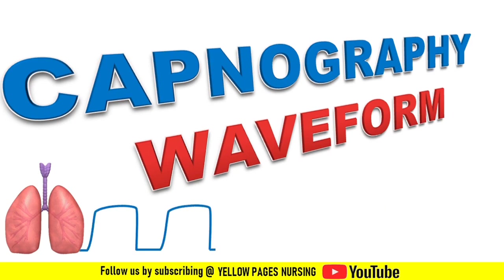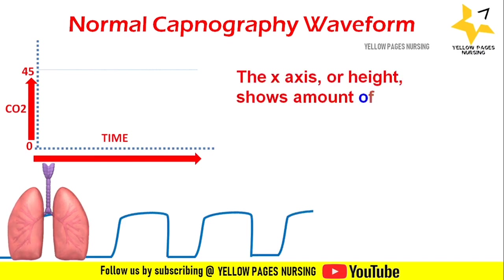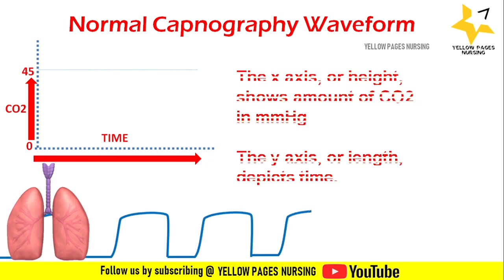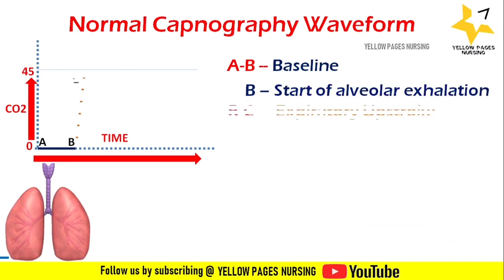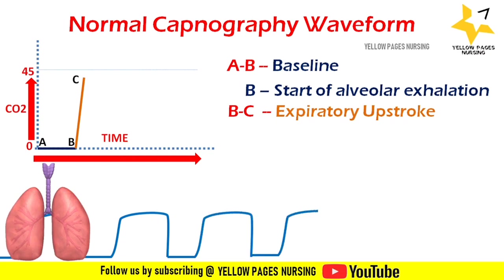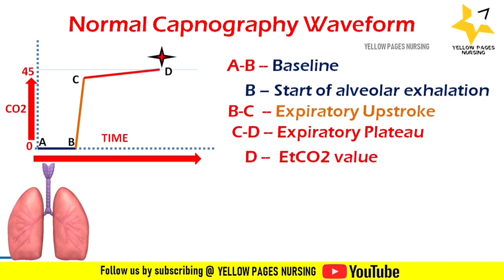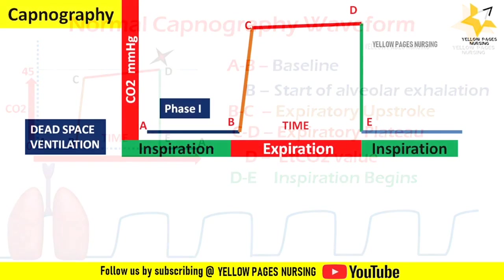Let's get into the session. Here is the normal capnography waveform. The x-axis or height shows the amount of CO2 in mmHg; the y-axis or length depicts the time. A-B denotes the baseline, where B is the start of alveolar exhalation. B-C denotes the expiratory upstroke, C-D denotes the expiratory plateau, and D denotes the ETCO2 value. D-E denotes where inspiration begins.